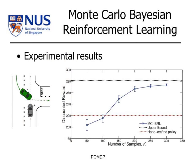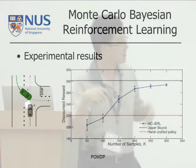Experimental results show that as we increase the number of sampled continuous parameters, performance increases toward the upper bound set by knowing the true MDP. The approach does fairly well compared to a handcrafted non-adaptive policy.